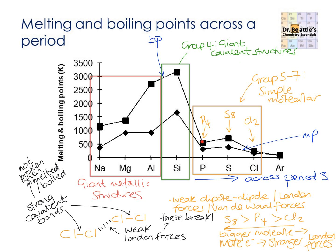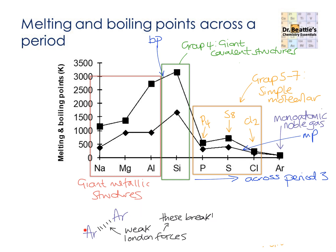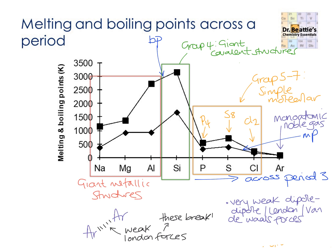Linked to the explanation for the simple molecular structures are our monoatomic noble gases. The monoatomic noble gases are single atoms — they don't need to bond to anything because they have full outer shells and are stable. What attracts each individual atom to one another is the same type of forces — London forces — that hold simple molecules together. These London forces are incredibly weak with the noble gases, because compared to the simple molecules which are bigger and have more electrons, you only have a singular argon atom being attracted to another singular argon atom.